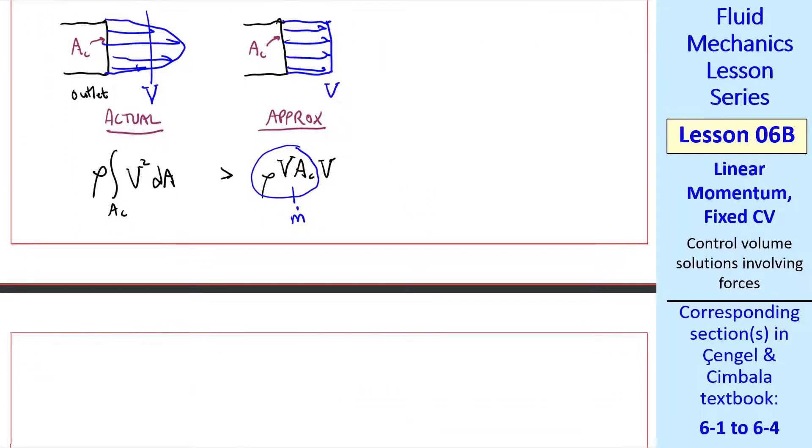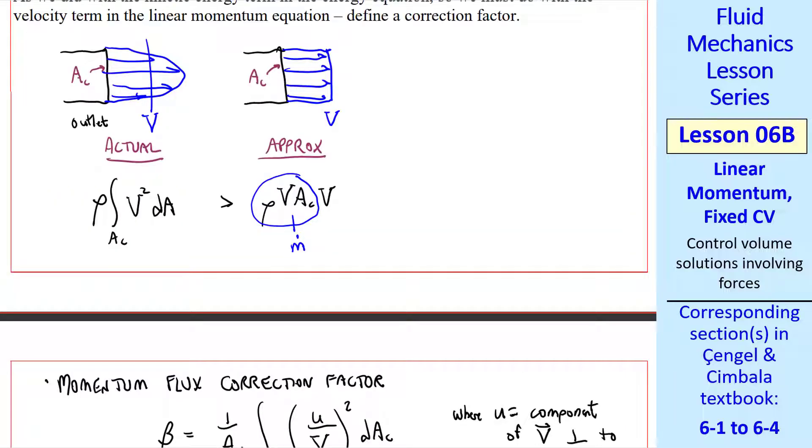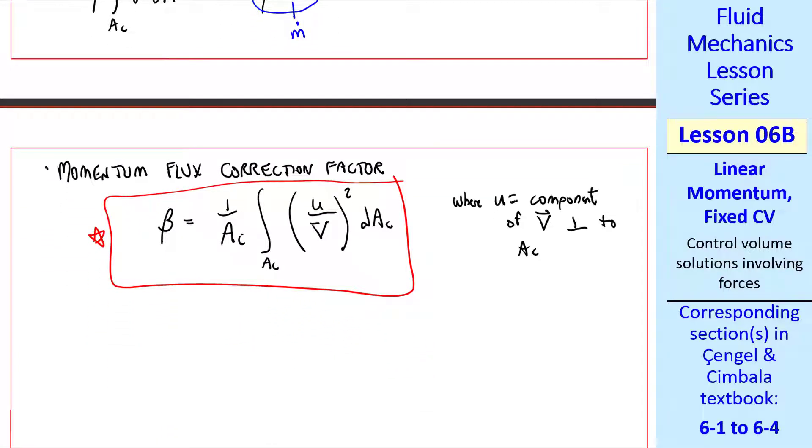Well, because of this, we have to define a momentum flux correction factor. We call it beta. Beta is 1 over ac, integral over ac, u over v squared dAc, where u is the component of v perpendicular to ac. In our case, if this is the x-axis, then this velocity component is u. So this is our momentum flux correction factor, very similar to the kinetic energy correction factor alpha, but with an exponent 2 instead of 3 here. Just as alpha was greater than or equal to 1, for any velocity profile, beta has to be greater than or equal to 1.